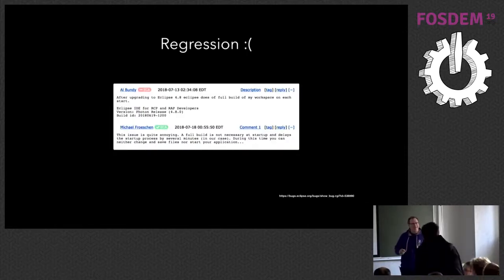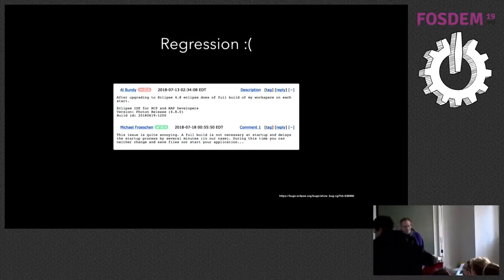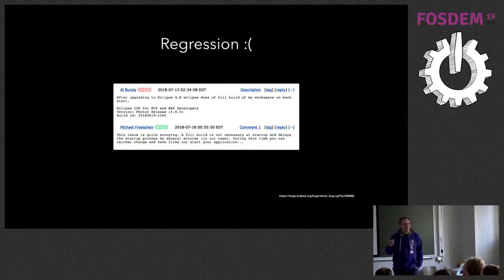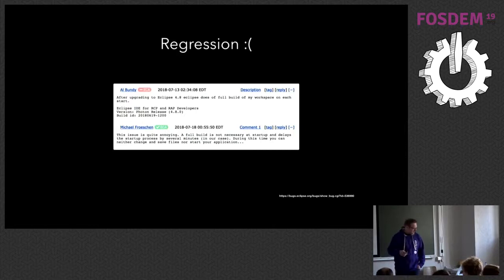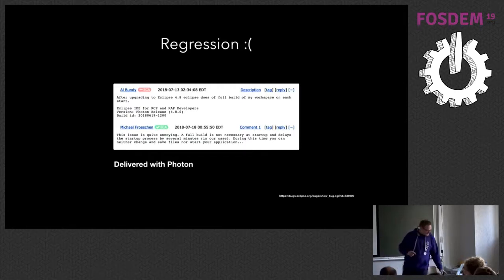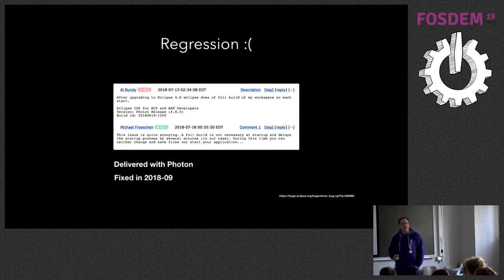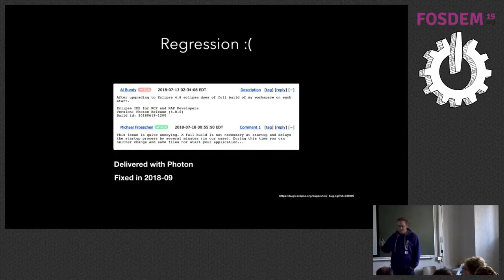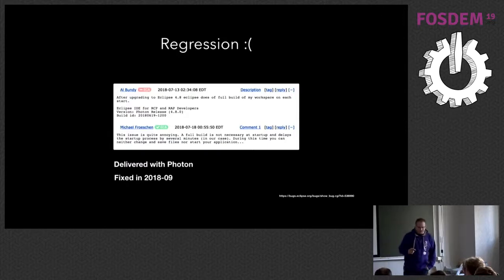But this raised a bug in Eclipse. Strangely, due to the introduction of this cache, Eclipse started to trigger a full build on startup — totally seemingly unrelated. Unfortunately, we actually delivered this with Eclipse Photon, but fortunately it was discovered. With the new release cycle of Eclipse — now every three months — we could provide a fix in Eclipse 2018-09. Now we have both a working build and reduced memory consumption.